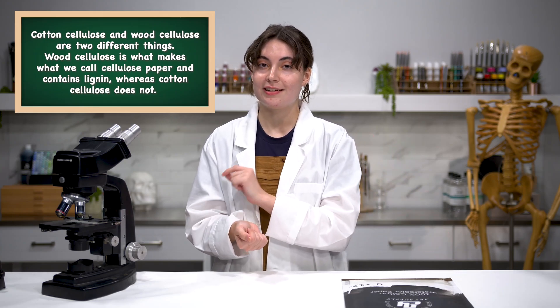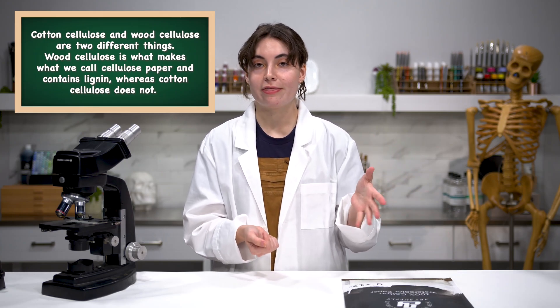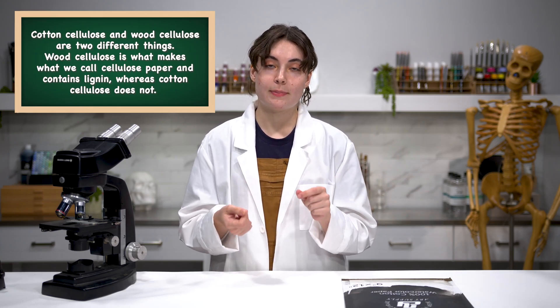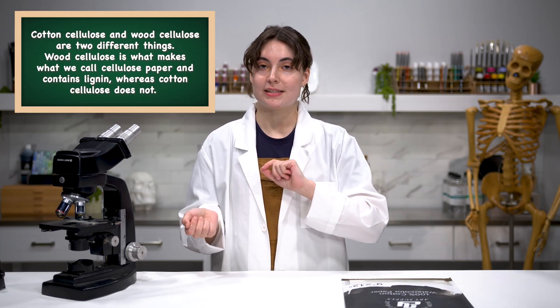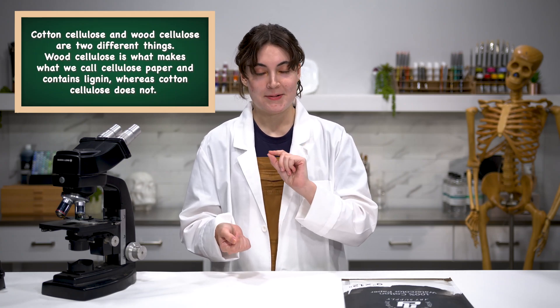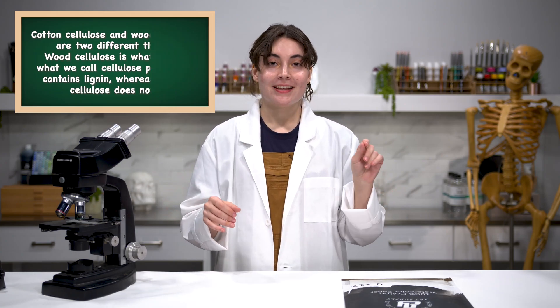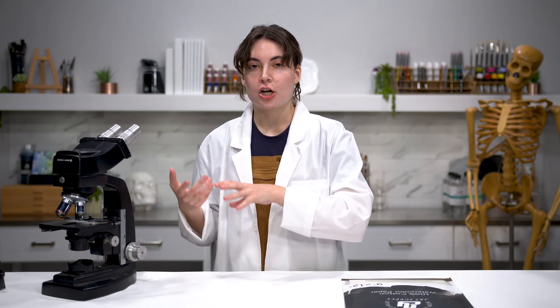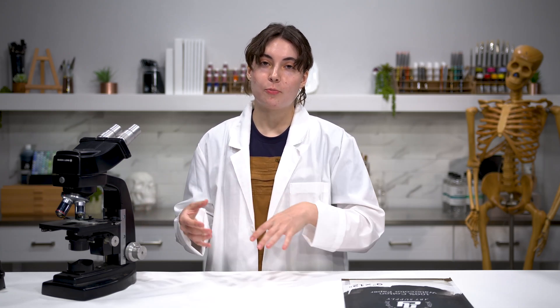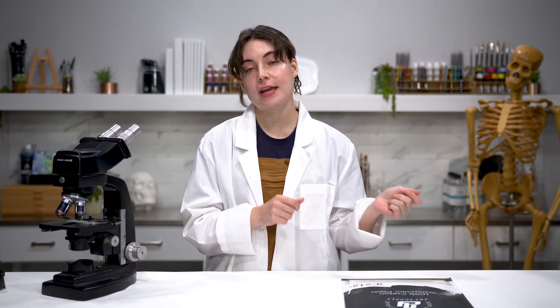Cellulose, on the other hand, is created from wood, and one thing specific about wood is that it has something called lignin in it — this is different from linen, two different words. Lignin is something that is naturally acidic. It occurs in wood, and when we have paper created from wood, like cellulose paper, we have to take that lignin out of the process.